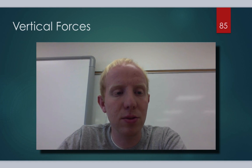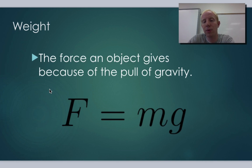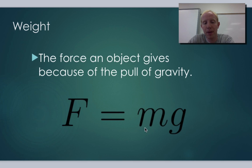Let's go back to last lesson and talk specifically about weight. If you recall, we talked about how weight is just a force — a force that occurs because we have the pull of gravity on us. So if we want to calculate it, we still use F equals MA, but we just replace A with G, which is 9.8 meters per second squared, the regular gravitational acceleration.